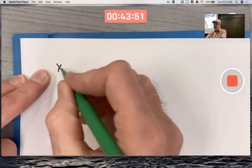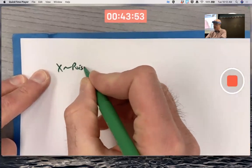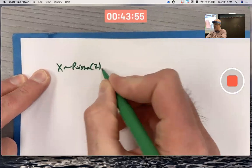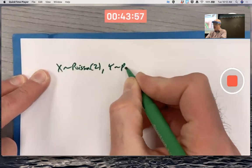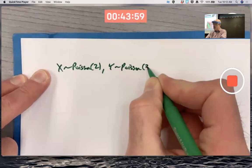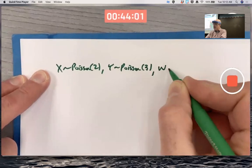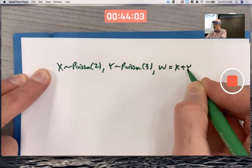So once again, X is Poisson with mean two, Y is Poisson with mean three, and W is X plus Y where X and Y are independent.